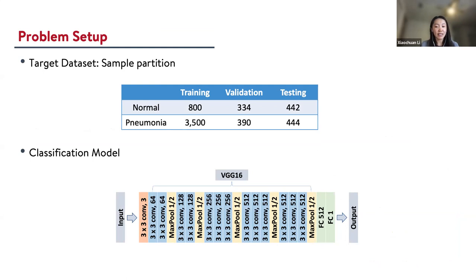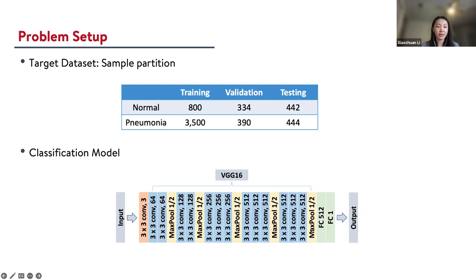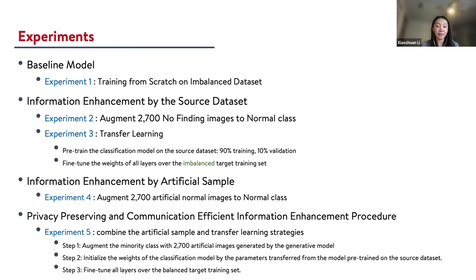For the problem setup, to mimic the situation discussed at the beginning, the target dataset is randomly partitioned into three sets: training, validation, and testing. The validation and testing sets are designed to be balanced to evaluate classification performance, while the training set is intentionally left severely imbalanced. The classification model used throughout the project is a modified VGG16 model. The input is single-channel grayscale X-ray images, and the final output is the probability that the input image has pneumonia. Based on these, we designed five experiments. The first experiment is treated as the baseline — trained from scratch on the imbalanced dataset.